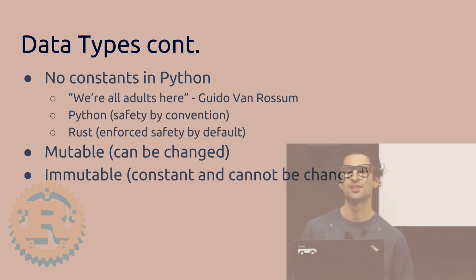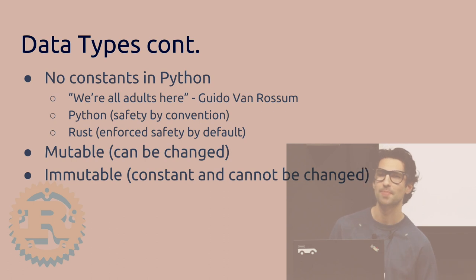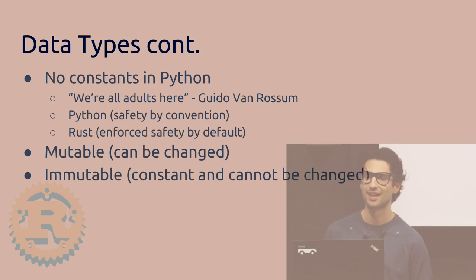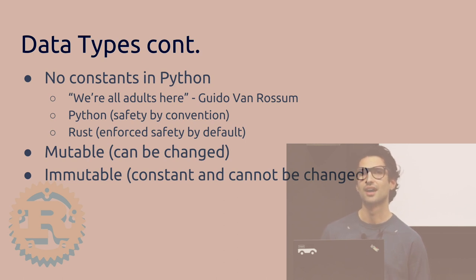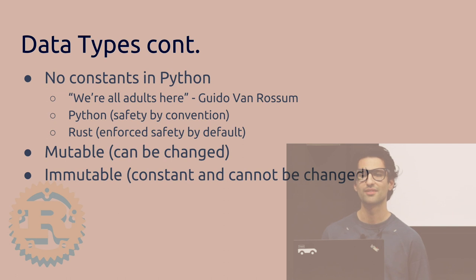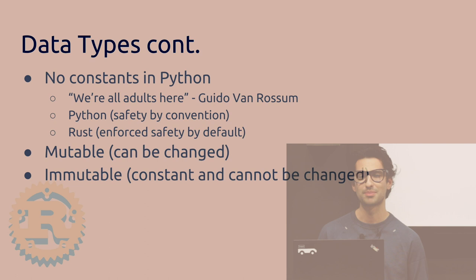What about constants? In Python, there are no formal constants. Guido van Rossum's quote when asked about this was 'we're all adults here.' So there are constants, but you just use capital letters to signify that it's a constant. The whole point is safety by convention — we've chosen the convention to use capital letters, meaning we will keep these values constant, but we won't enforce it. We're all adults here.